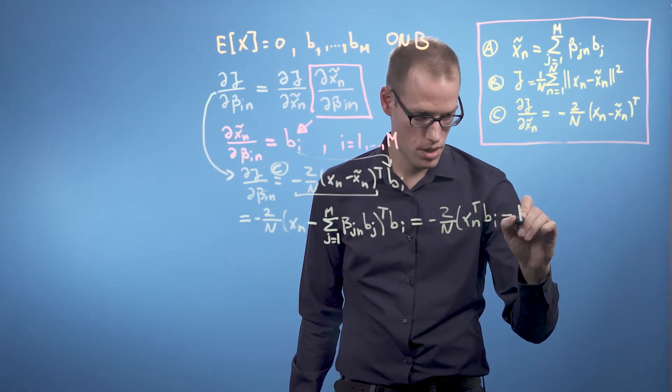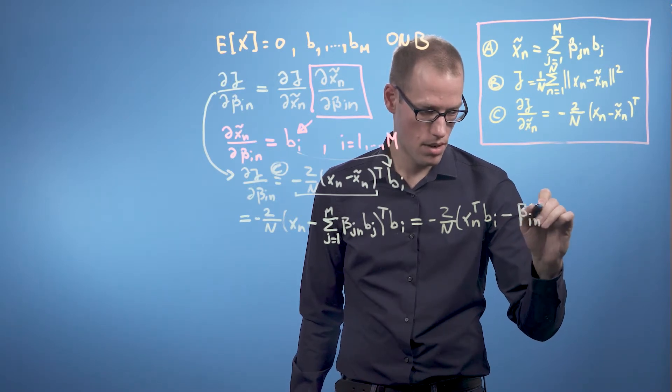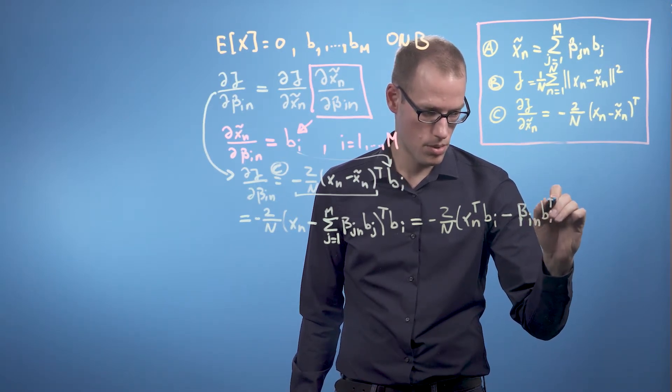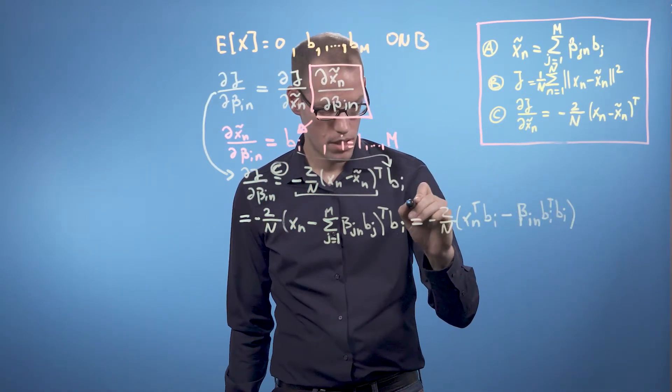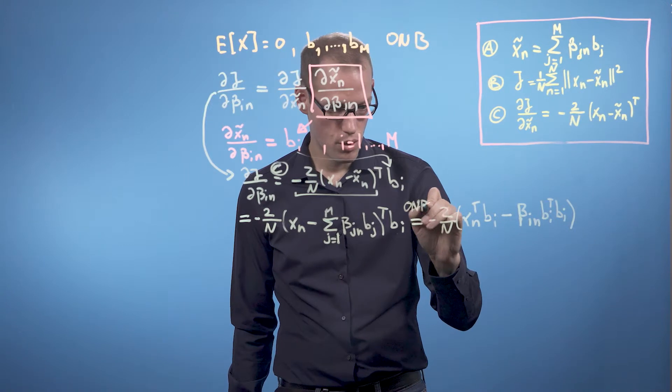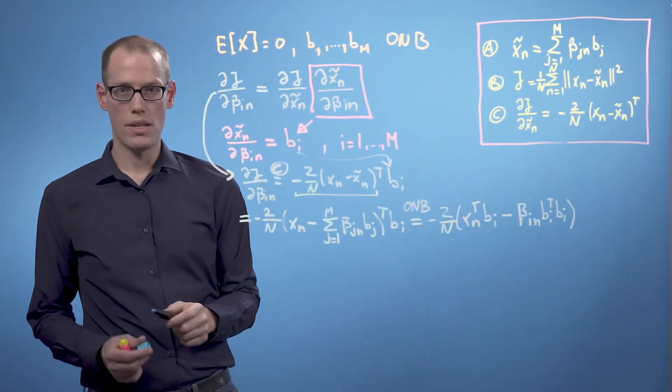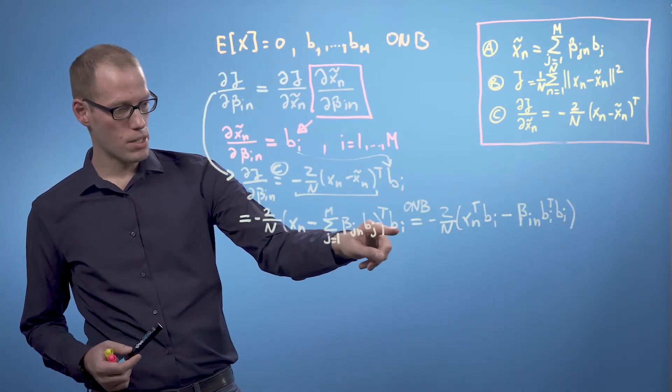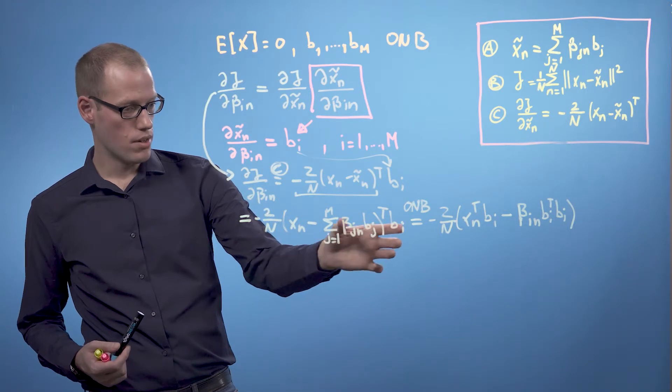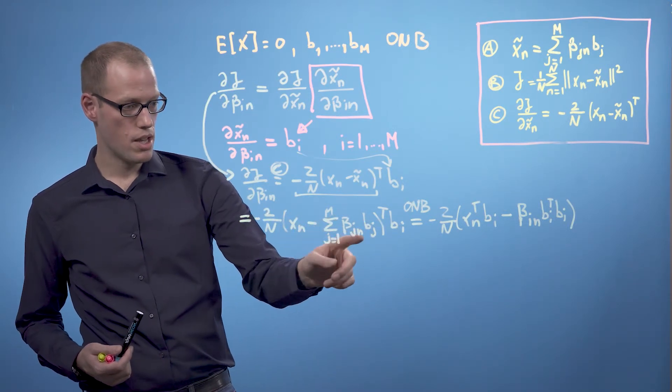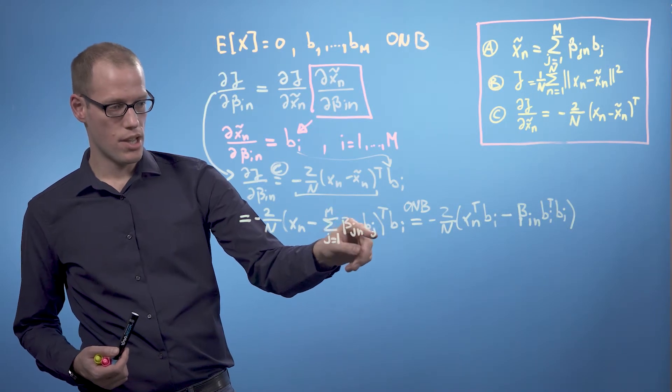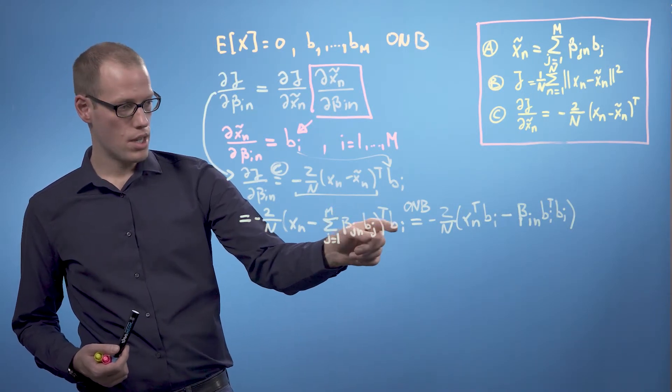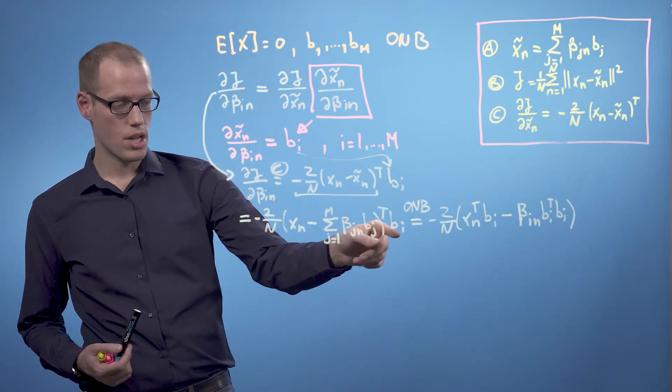Minus beta in times bj transpose times bi where we exploited that the bi form an orthonormal basis. If we multiply bj onto both components here, we end up with the sum of bjn times bj transpose times bi.